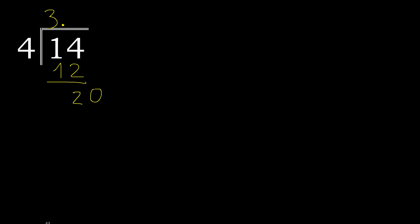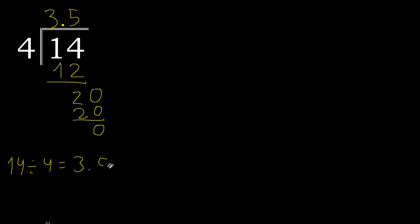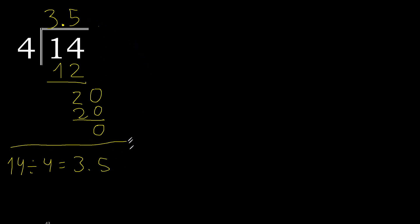4 — multiply by which number? 4 multiply by 5 is 20. Subtract: 0. Therefore finish. 14 divided by 4 is 3.5. Finish.